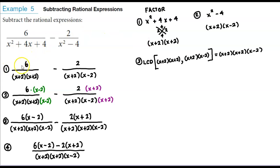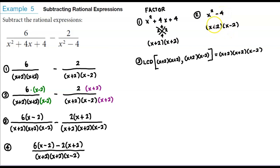We rewrite this as 6 over x plus 2 times x plus 2, minus 2 over the factored form of x squared minus 4. That's a difference of squares, so it becomes x plus 2 times x minus 2.